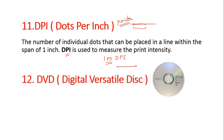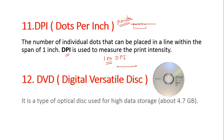Next is DVD. It is an optical disc, similar to a CD but with higher storage capacity. On a single-sided DVD, you can store up to 4.7 GB of data. Double-sided DVDs are also available, with the single-sided capacity being 4.7 GB.